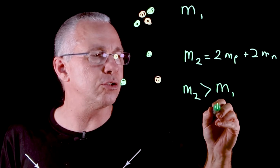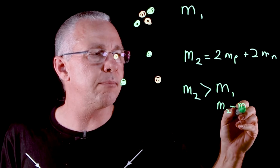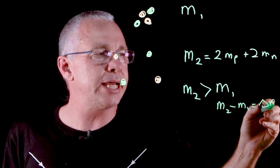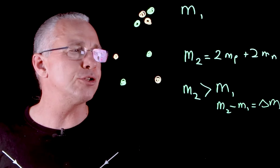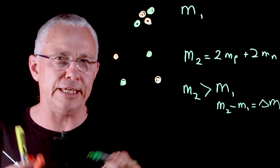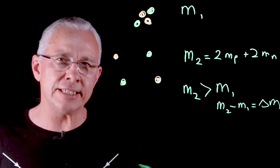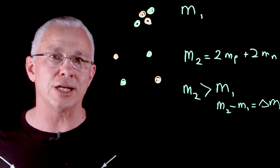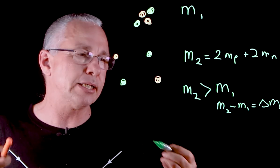If I subtract the two, m₂ minus m₁, I get this change in mass which we refer to as the mass defect. That mass defect is the energy that I put into the system in order to break it apart.